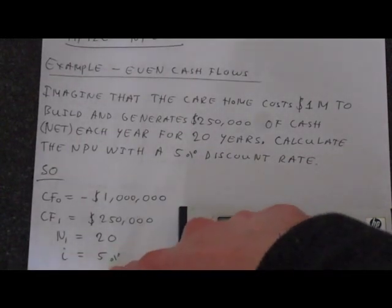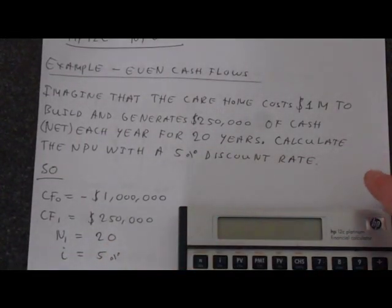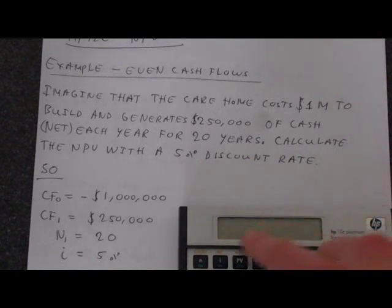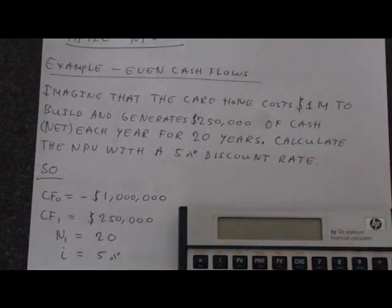I is going to be 5%, though it's good to be aware that on this calculator, the I memory automatically divides everything that goes into it by 100 to get you a percentage. You don't have to enter it as a percent, so we'll be entering just 5.